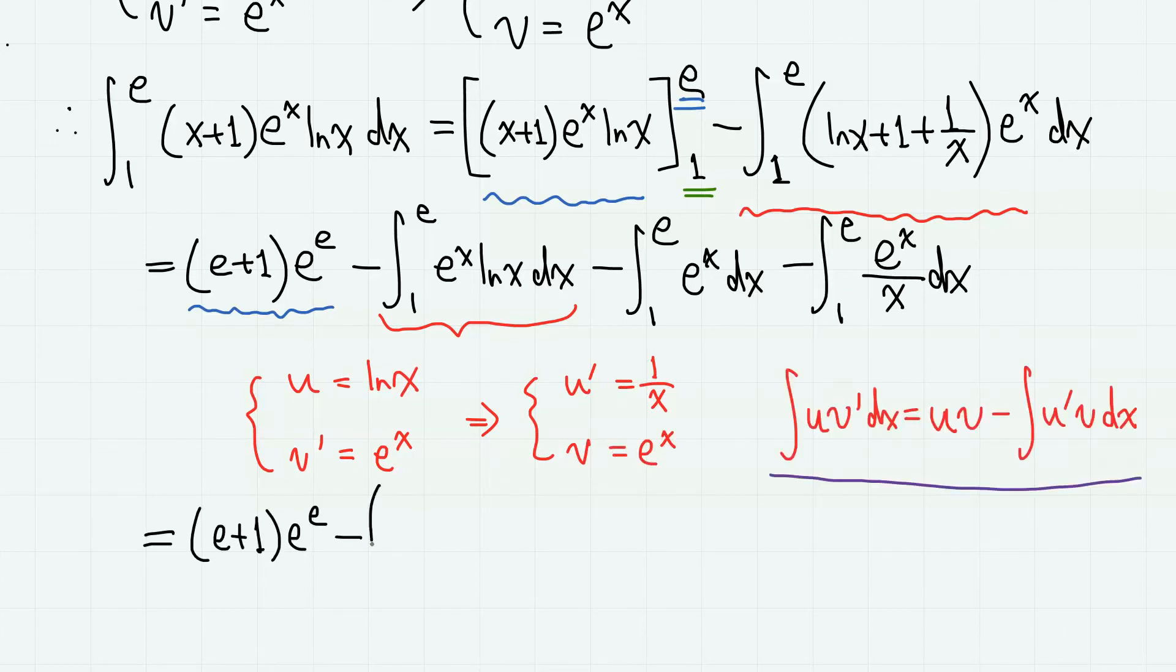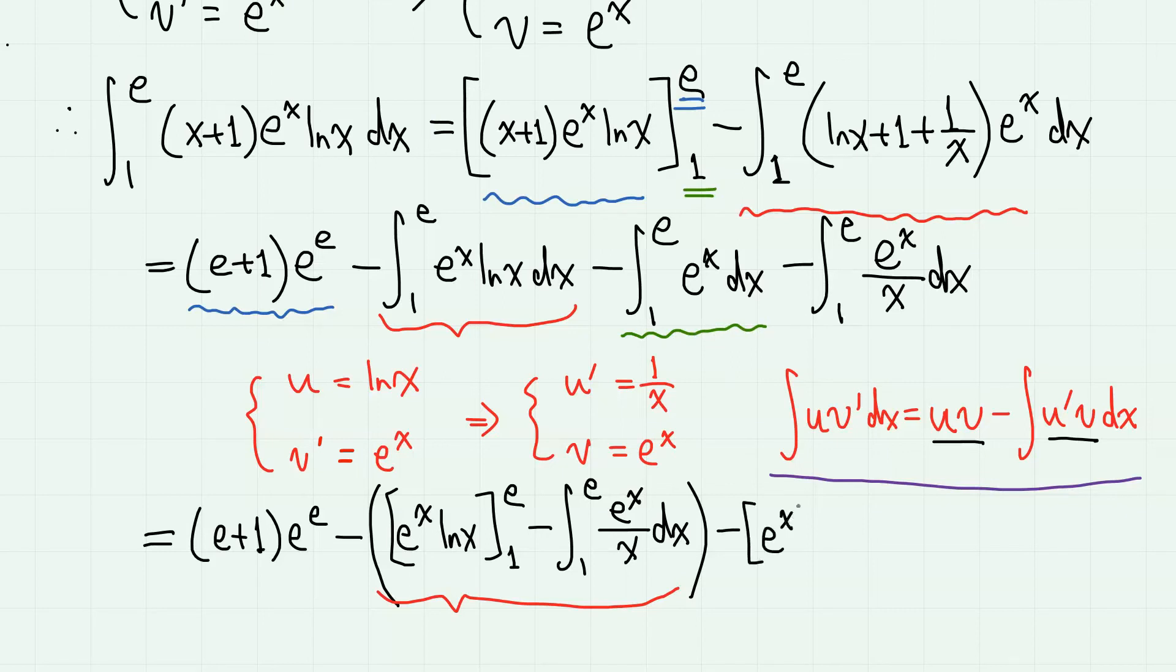Then we have uv is e^x ln(x), and u'v is e^x/x. And now this term we can easily integrate, which simply gives e^x, then we have this remaining term.